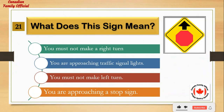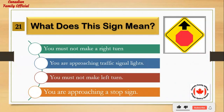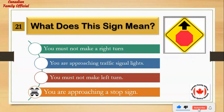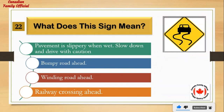What does this sign mean? Number 1: you must not make a right turn. Number 2: you are approaching traffic signal lights. Number 3: you must not make a left turn. Number 4: you are approaching a stop sign. And the answer is: you are approaching a stop sign.